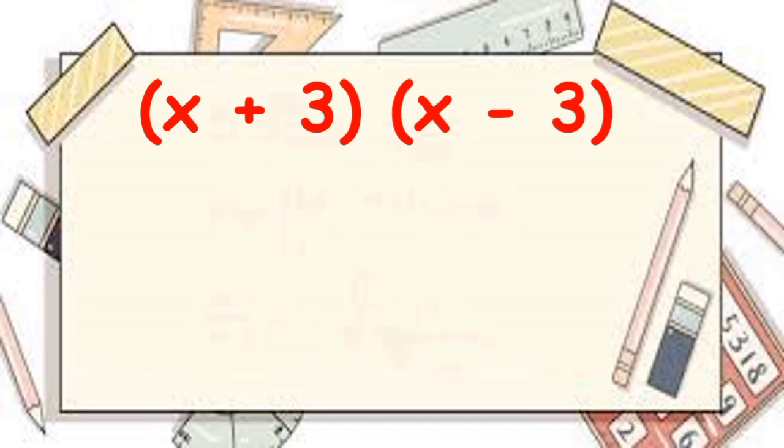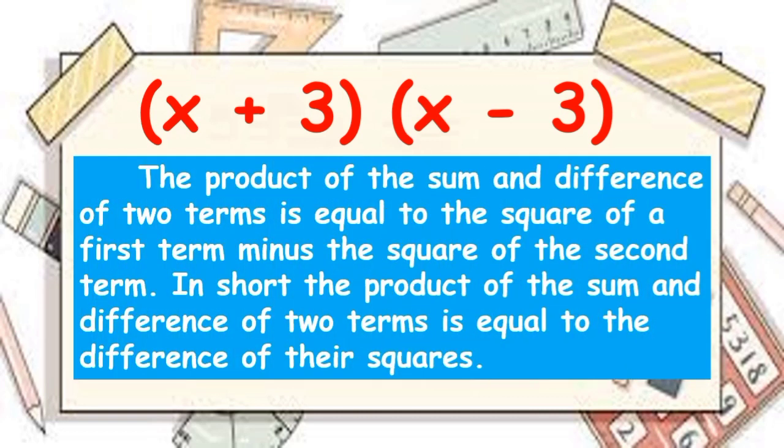The difference between the two is the first given is plus or addition and the second given is minus or subtraction. The product of the sum and difference of two terms is equal to the square of the first term minus the square of the second term.